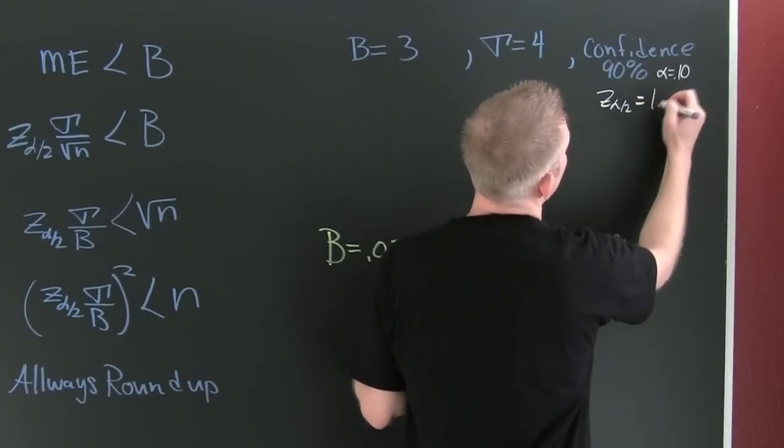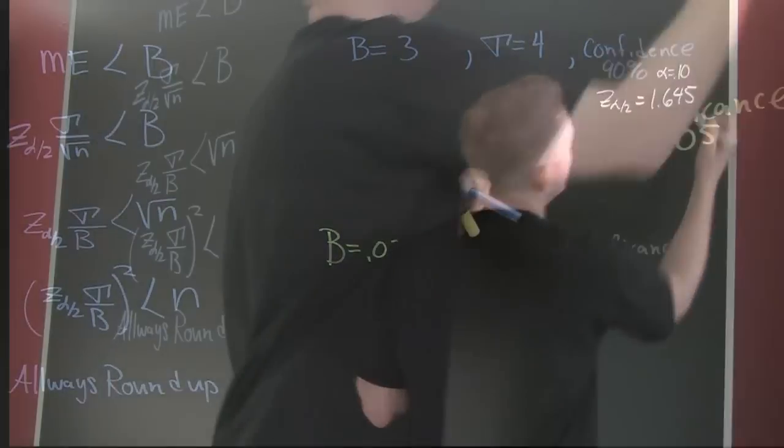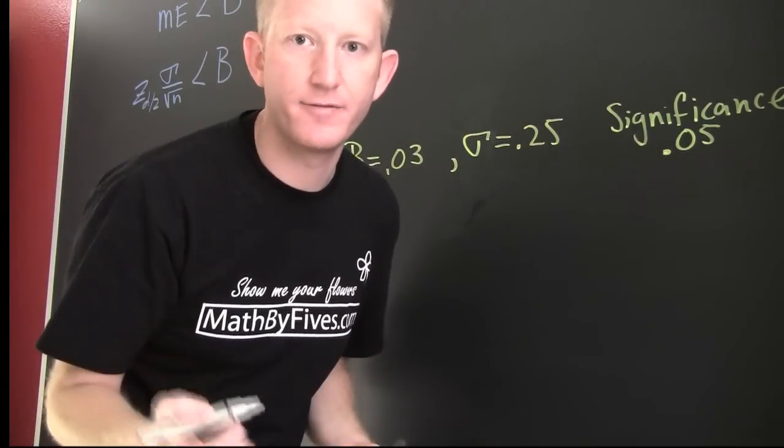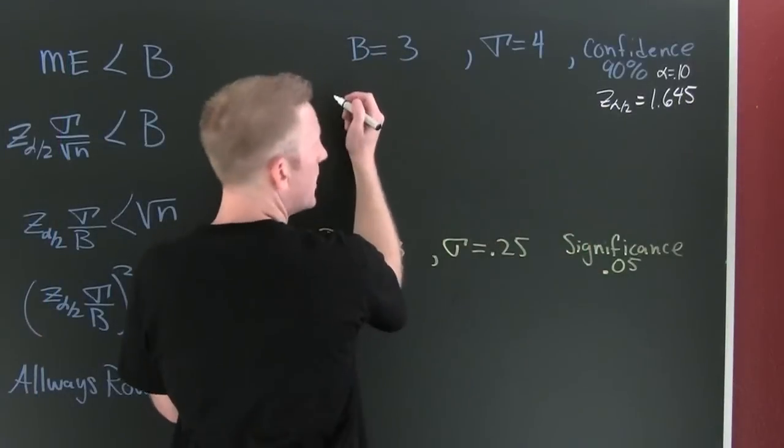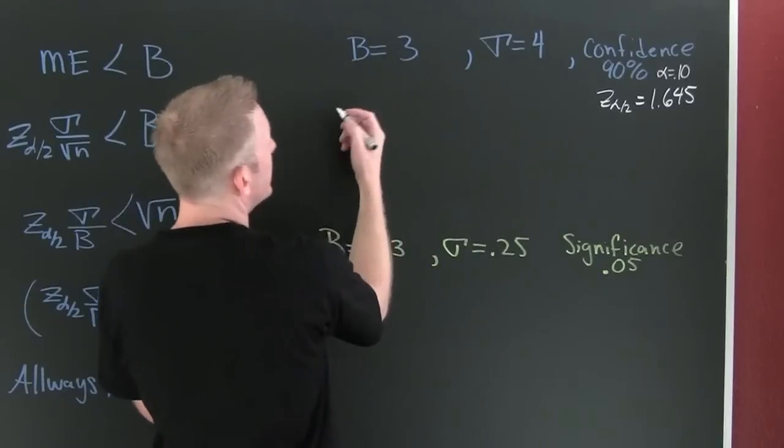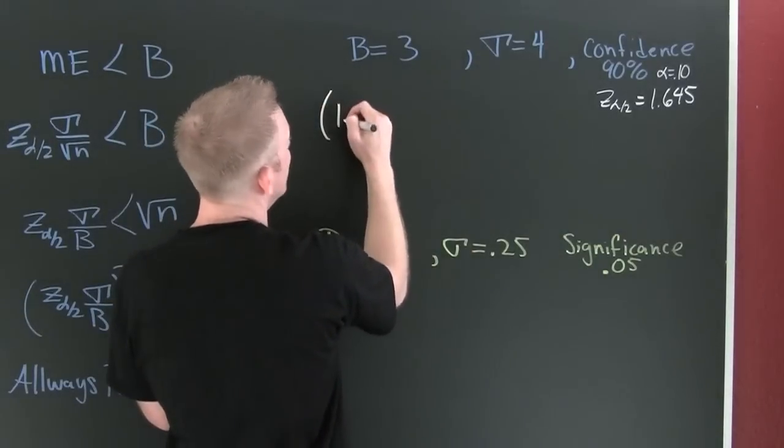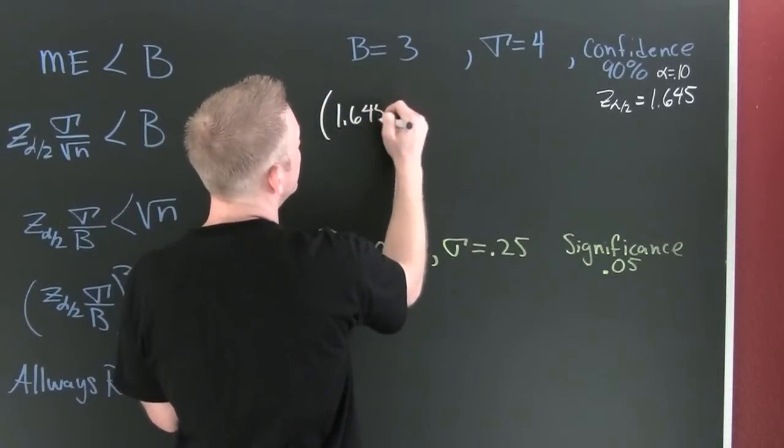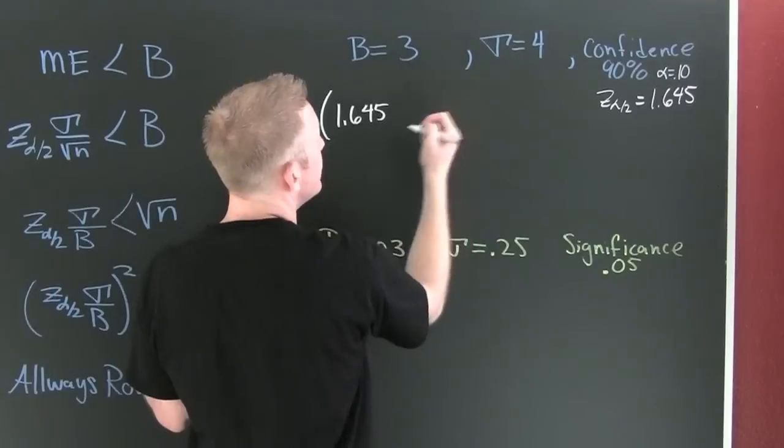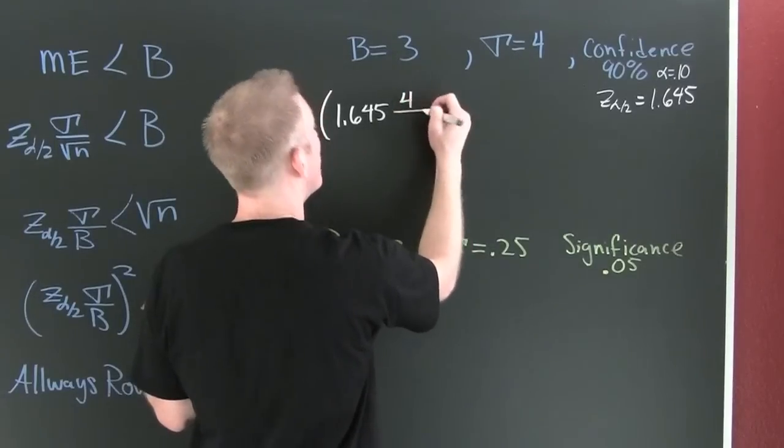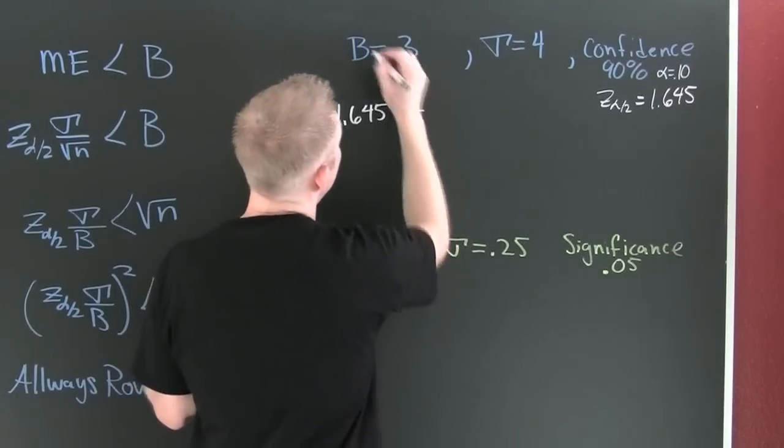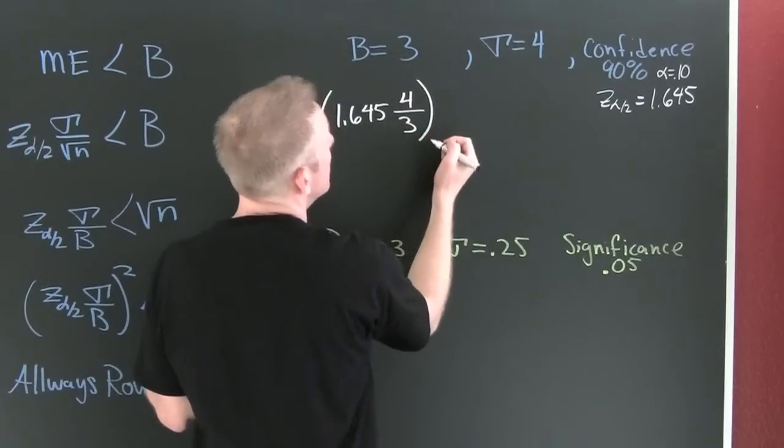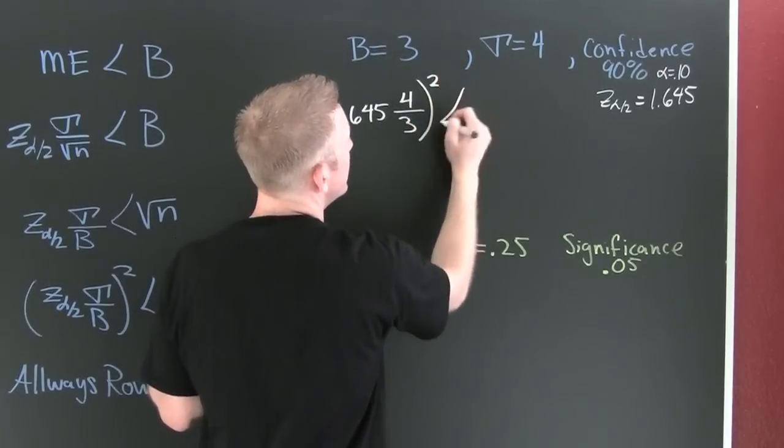So then our z alpha over two is 1.645. There's a complete video on how to find z values. So then I throw it up here. This is 1.645 times my standard deviation of my population, it appears to be four packages, divided by my b, which is three. That's the bound on my error. I'm gonna square it and that's gonna be smaller than n.